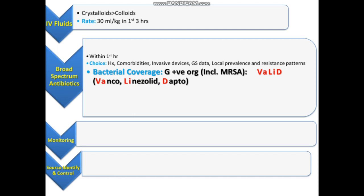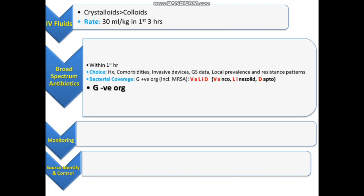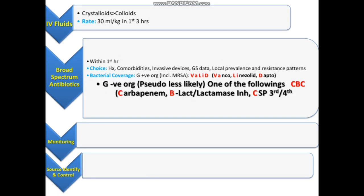In septic shock, we need to assess whether Pseudomonas is less likely or more likely, because our antibiotic coverage differs. If Pseudomonas is less likely, we use one of the following antibiotics — remembered with the mnemonic CBC: along with gram-positive cover, we give one drug from this group.